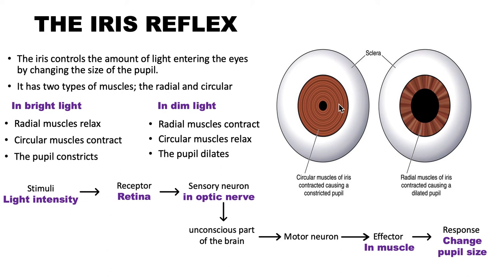All muscles in our bodies, wherever they are, are antagonistic muscles, meaning when one contracts the other relaxes. So because in the iris we have the radial as well as the circular muscles, when the radial muscles relax, the circular muscles have to contract so that the size of the pupil can be decreased.